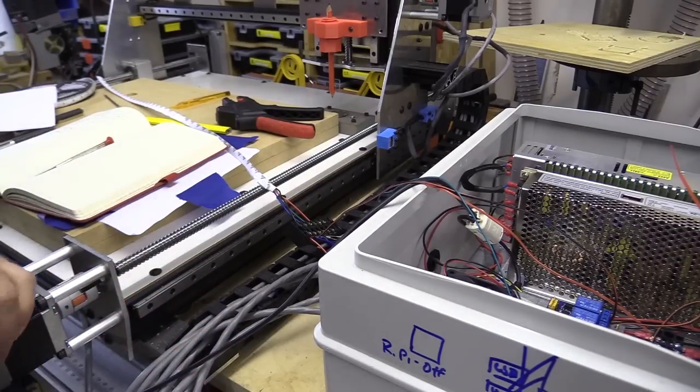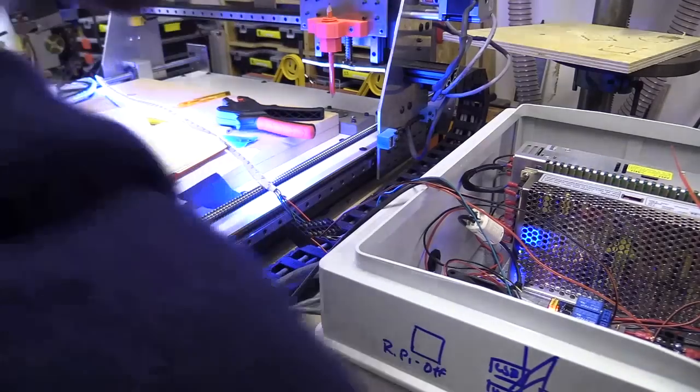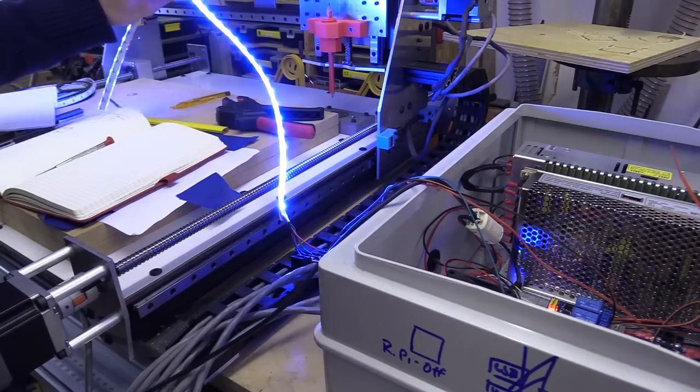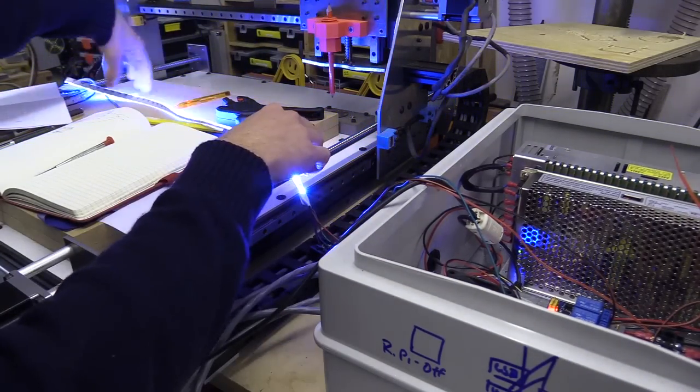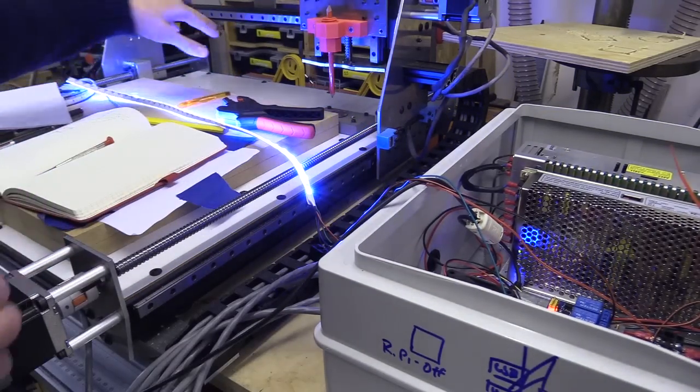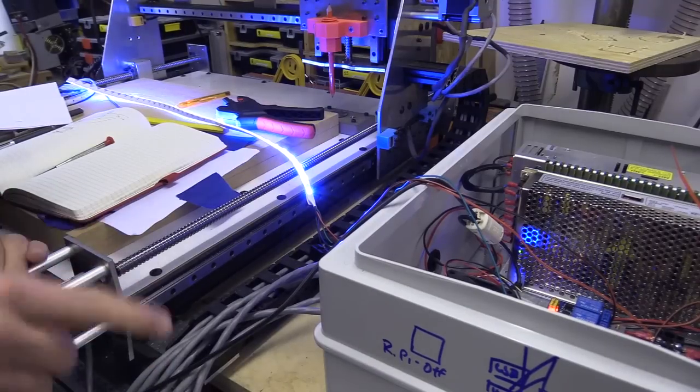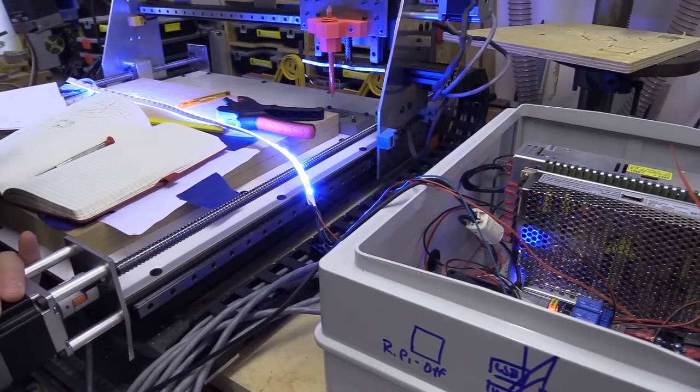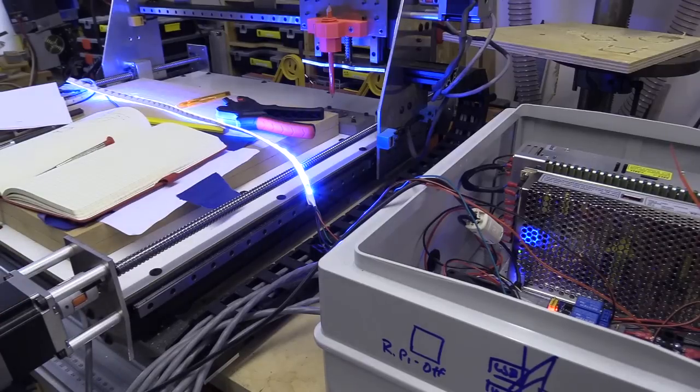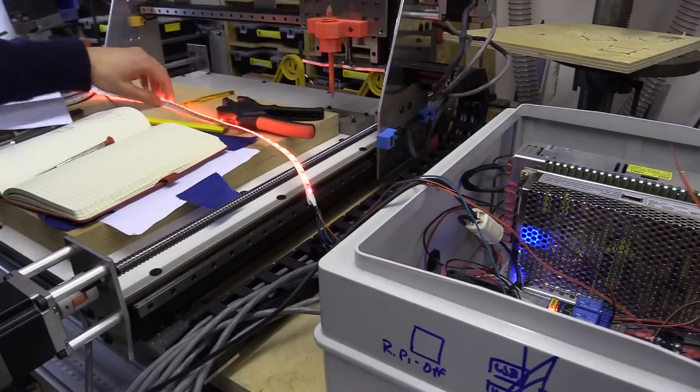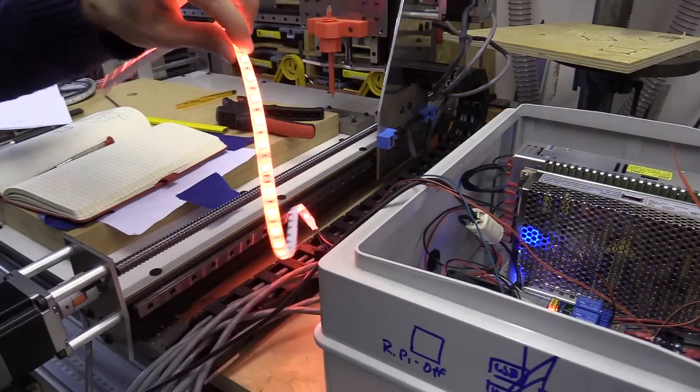So when the machine turns on, and I'll just turn it on now, you get a white light which will illuminate from underneath the gantry, and when the spindle is on, which I'll just turn on using the software, it becomes red, red for danger.